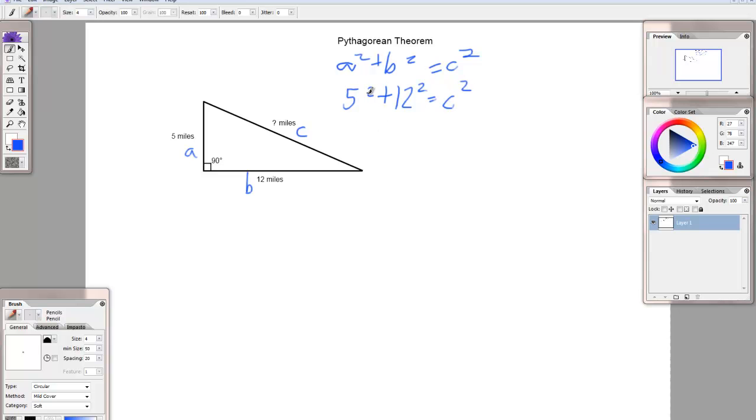5 squared means 5 times 5, squared is something times itself. So, 5 times 5 is 25, plus 12 squared, 12 times itself, 12 times 12 is 144, equals c squared.